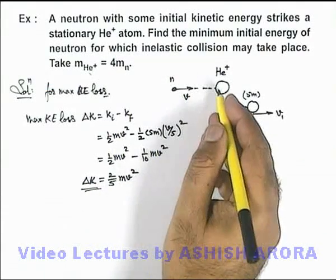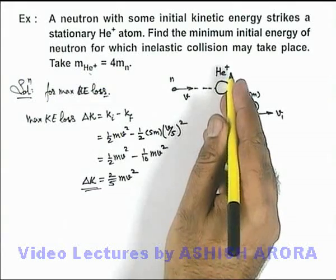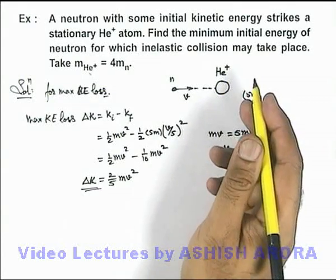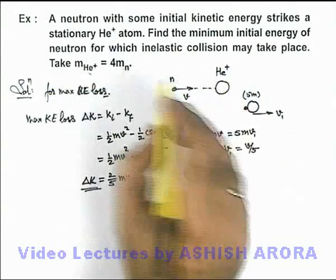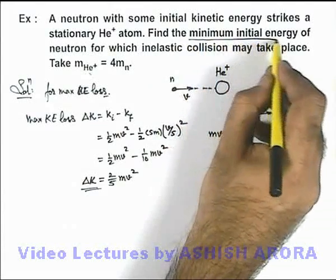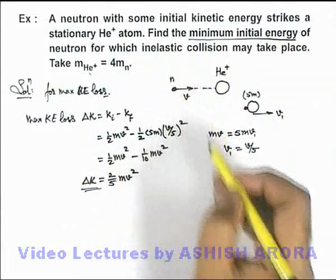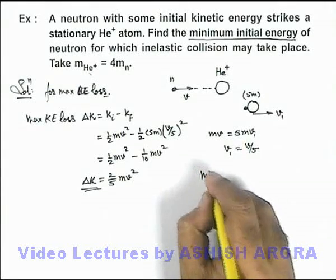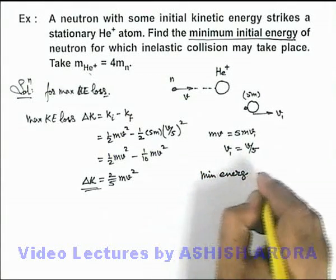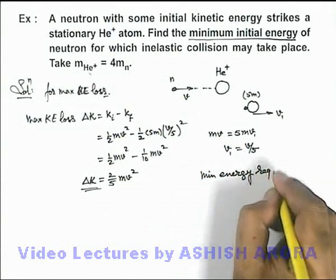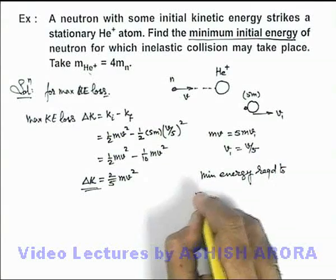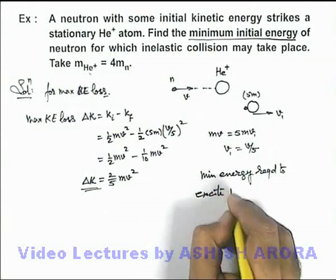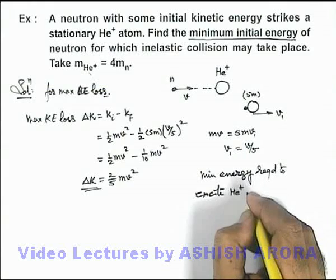Which can be absorbed by the helium plus ion to get excited. Now in this situation we're required to find the minimum initial energy so that inelastic collision may take place. So here we can simply write minimum energy required to excite He plus is...